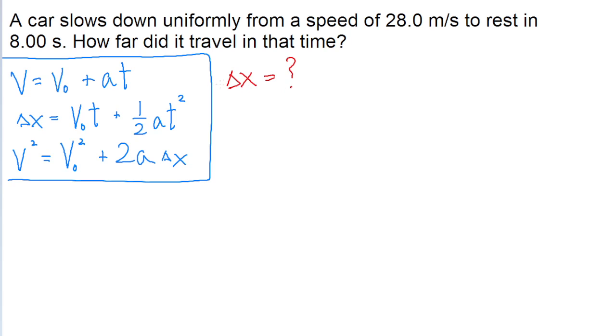We're also told that the car is slowing down from a speed of 28 meters per second. So the initial speed v-naught is 28 meters per second, and it's slowing down to rest. So the final speed is zero. We're also told that this happens over the course of eight seconds. So time t is equal to eight seconds.